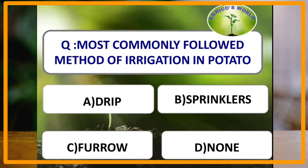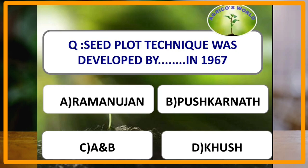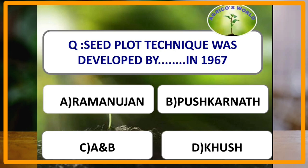The most commonly followed method of irrigation in rooted crops is the furrow method. Seed plot technique was developed by Pushkarnath in 1967, and it is useful for the multiplication of disease-free seeds in northern countries.